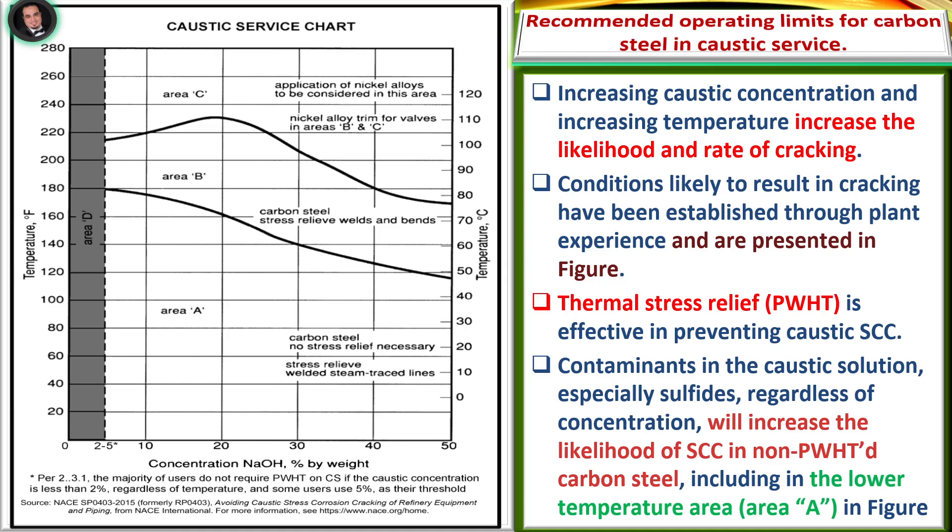Conditions likely to result in cracking have been established through plant experience. Thermal stress relief or PWHT is effective in preventing caustic stress corrosion cracking. Contaminants in the caustic solution, especially sulfides, regardless of concentration, will increase the likelihood of stress corrosion cracking in non-PWHT carbon steel, including in the lower temperature area (Area A) in the figure.